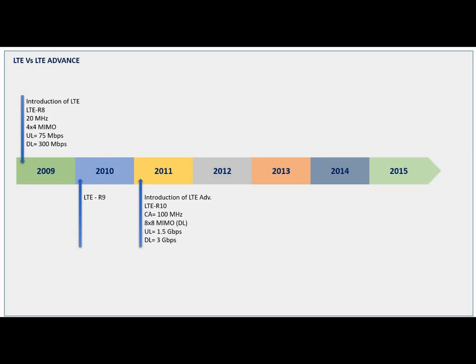Finally, in 2010, LTE Advanced was introduced as a Release 10 standard. The highlight of Release 10 was 3 Gbps — that was amazing — with 8x8 MIMO, carrier aggregation, IMS, VoLTE, and more. It was a boom for LTE.